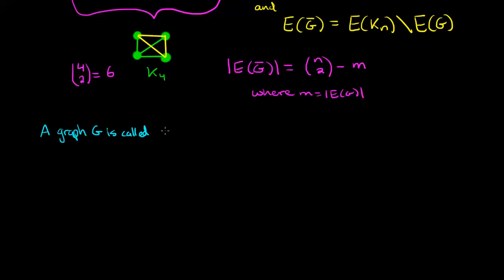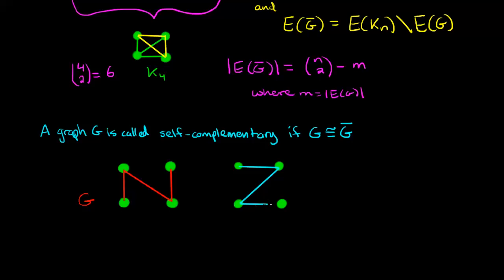A graph g is called self-complementary if the graph is isomorphic to its complement. Let's take a look at an example. Here we have four vertices and I'll draw in some edges and that's the graph g, and if we take a look at the graph g complement, we see that it also has four edges and not only that, both of these are examples of a path on four vertices so they are isomorphic.